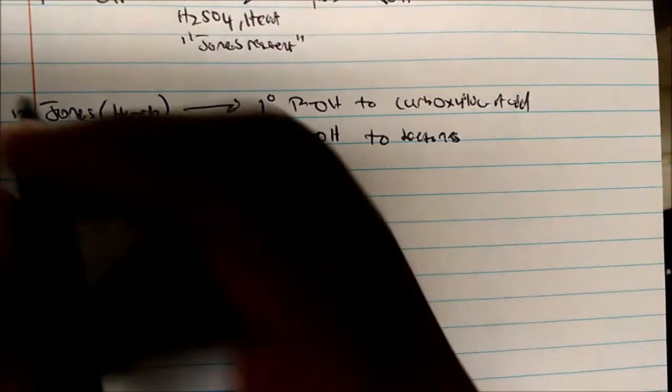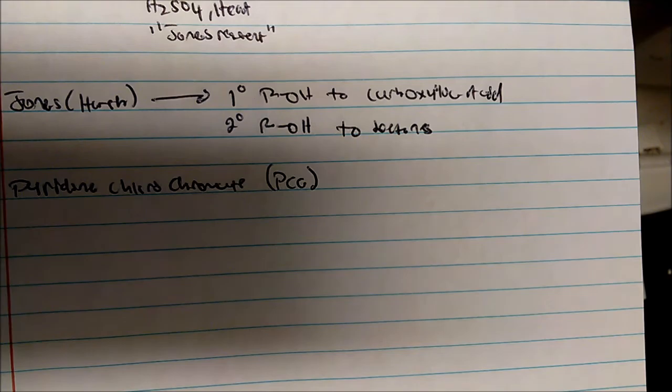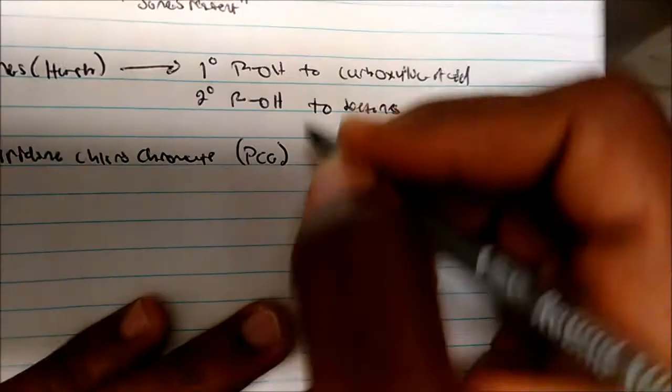There's also another interesting one that I promise you'll see no matter where you're taking organic chemistry one. This is called pyridine chlorochromate, and usually you'll see that as PCC in any stock room. It's usually labeled as PCC.